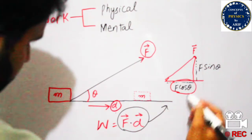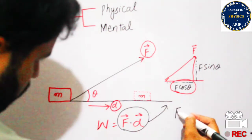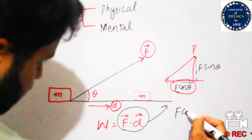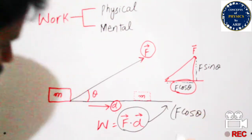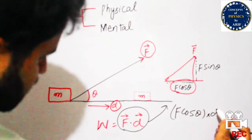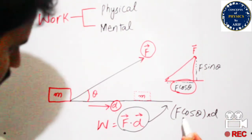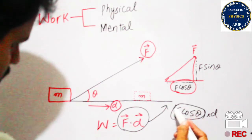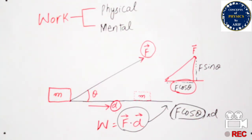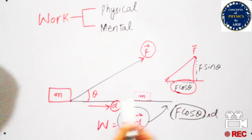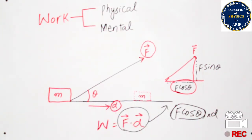The formula becomes F dot d = F cos theta times displacement. The reason F cos theta is taken is because F cos theta is the component of force which is along the direction of displacement, and this is our definition of work done.